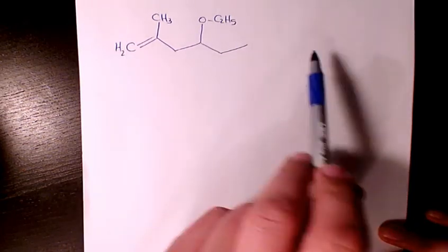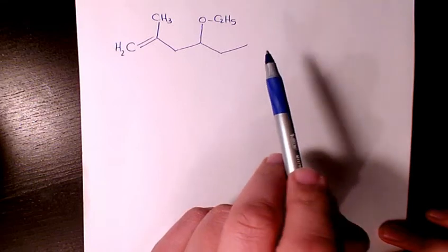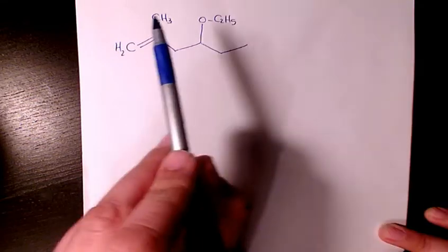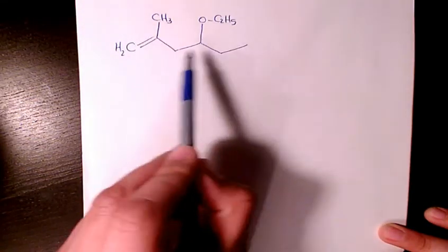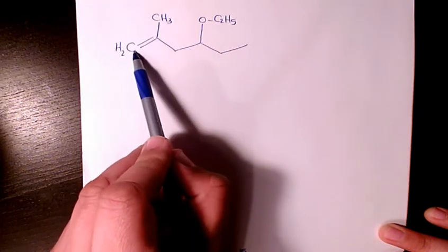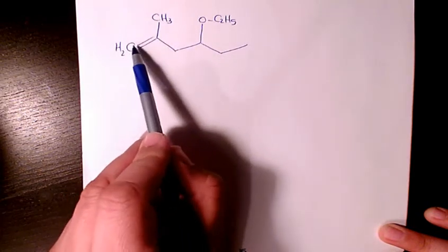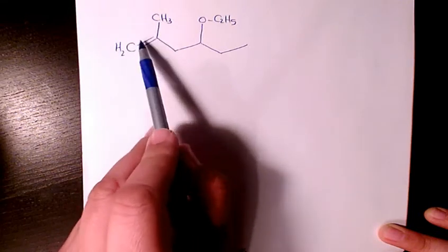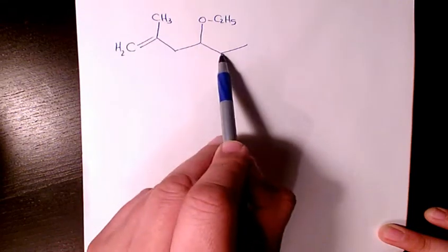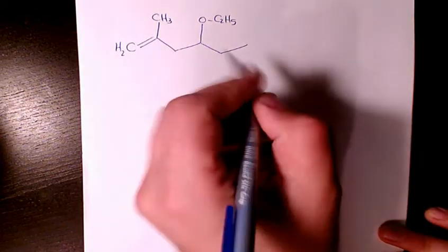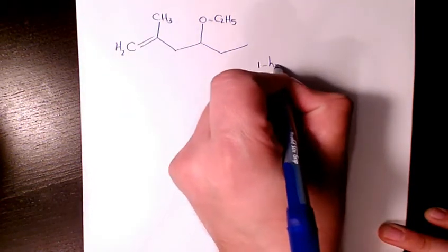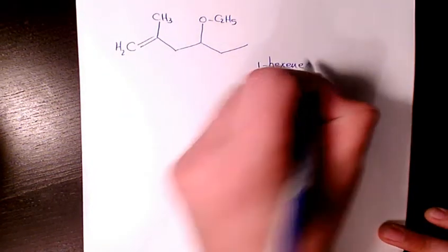So we are dealing with an ether here. Let's name it. The longest group is going to be one, two, three, four, five, six—six carbons. Start from this side because we have a double bond. So it's going to be one, two, three, four, five, six. That's going to be 1-hexyne because it starts from here.